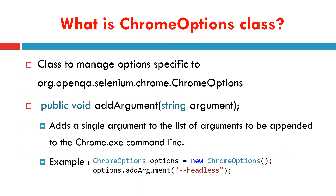The ChromeOptions class is available in the org.openqa.selenium.chrome package. This class is used to manage the options specific to the Chrome browser. In our case, we are going to use one method called addArgument, which takes a string argument.